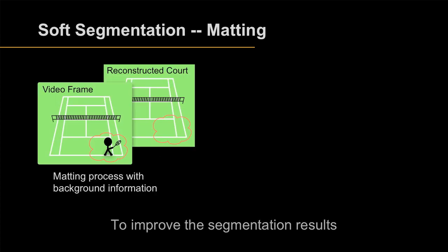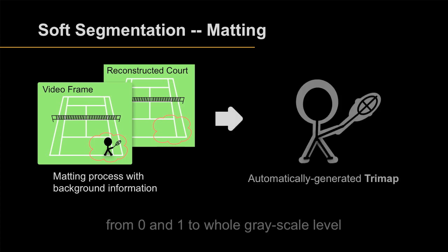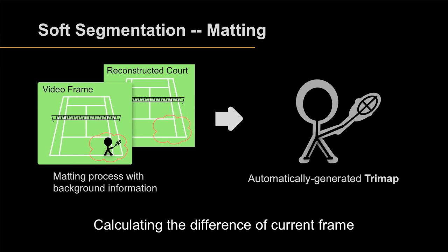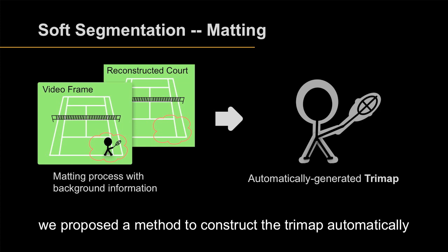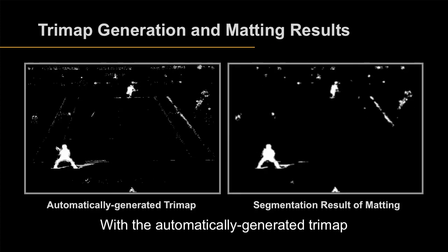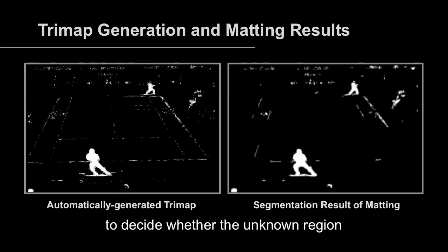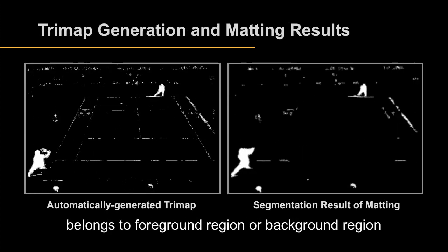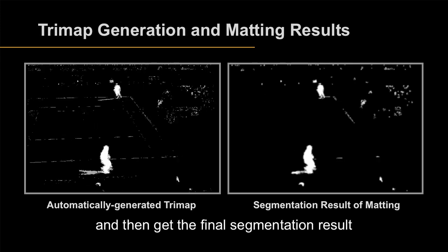To improve the segmentation results, we use soft segmentation, which extends the segmentation masks from binary 0 and 1 to the whole grayscale level. Calculating the difference of the current frame and the reconstructed frame, we propose a method to construct a trimap automatically. With the automatically generated trimap, we apply special matting to decide whether the unknown region belongs to the foreground or background, and then get the final segmentation result.